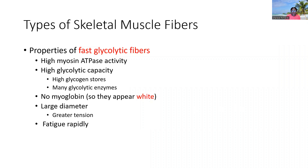They're going to have no myoglobin — that's why they appear white, or don't stain red. They're going to have a large diameter, meaning a lot of tension and force produced because they have a lot of myofibrils, which means a lot of cross-bridge cycling. The price to pay is that they fatigue rapidly because of anaerobic glycolysis, and because lactic acid builds up as a byproduct. So they fatigue more rapidly and cannot sustain contractions for as long.